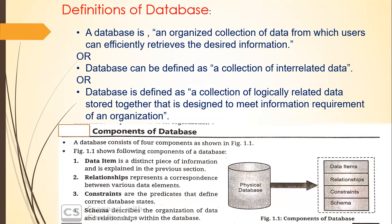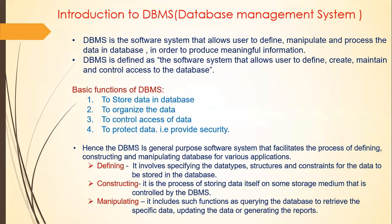The next component is the constraint. Constraints are predicates that define the correct database states — for example, unique constraints, not null constraints, and primary key constraints, which identify a record uniquely. The next component is the schema, which describes the organization of data and relationships within the database. The schema represents the table structure and the combination of multiple tables in a single database.